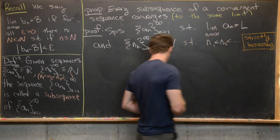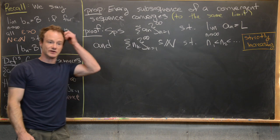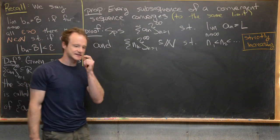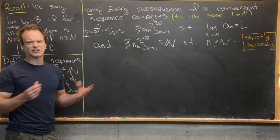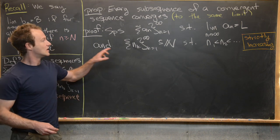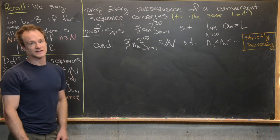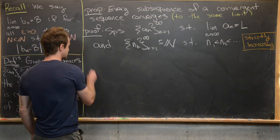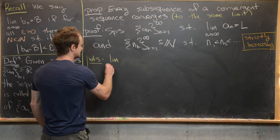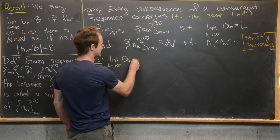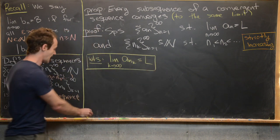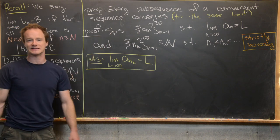Since n_k is a strictly increasing sequence of natural numbers, it cannot be bounded — that should be easy to prove. Now we want to show that the limit as k approaches infinity of a_{n_k} also equals L, showing that a_{n_k} is a convergent sequence with the same limit as a_n.